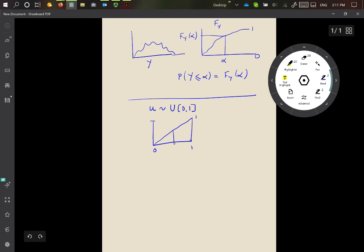And so for any value alpha, the probability which is F_y of alpha is just given by alpha because it's just the identity equation.